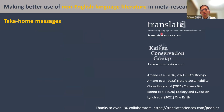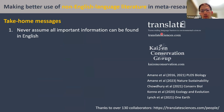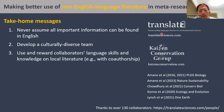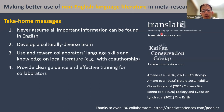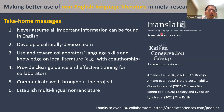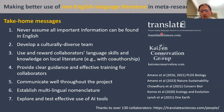That basically concludes my talk today, but here are some take-home messages. First, never assume all important information can be found in English, because that is not true. Second, develop a culturally diverse team to make the best use of knowledge from around the world. Third, use and reward collaborators' language skills and knowledge on local literature, for example in the form of co-authorship. Also make sure to provide clear guidance and training for collaborators, communicate very well throughout the project, and establish multilingual nomenclature. Finally, we need to explore and test the effective use of AI tools in multilingual evidence synthesis.